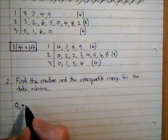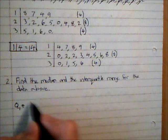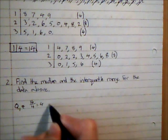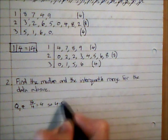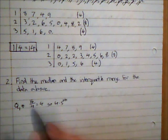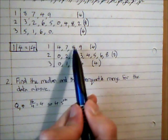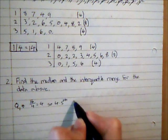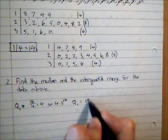So I've got 16 bits of data. So 16 over 4 is 4. So I want the 4.5th value. So that's going to be 1, 2, 3, 4, and 5. So between 19 and 20 is going to be 19.5.